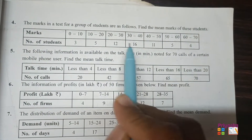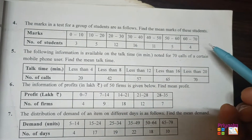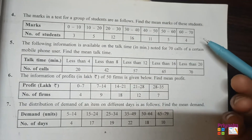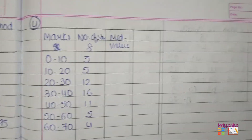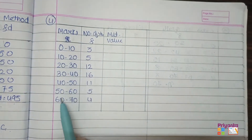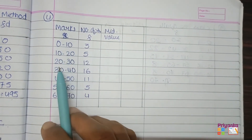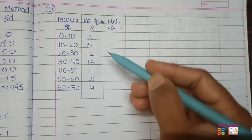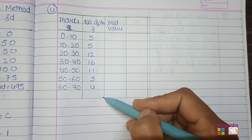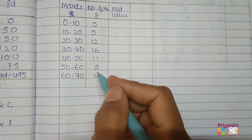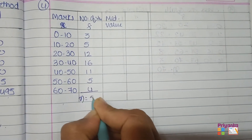Here the frequency is given. We are going to first find out the mid value and then multiply it with the frequency — I will show you with the calculation. First, let's take the information from the book. Here the marks and number of students are given, with classes of 0 to 10, 10 to 20, 20 to 30 — this is a continuous frequency distribution. First, let's take the total of frequency, which is n = 56.